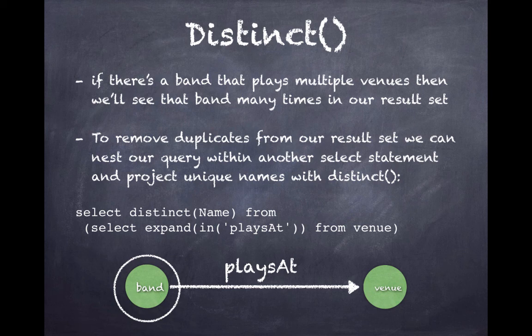To remove duplicates from our result set, we can nest our query within another SELECT statement and project unique names with DISTINCT. So to find all of the bands that are playing at any venue and to remove duplicates, we'll say SELECT DISTINCT NAME FROM SELECT EXPAND IN playsAt FROM venue.